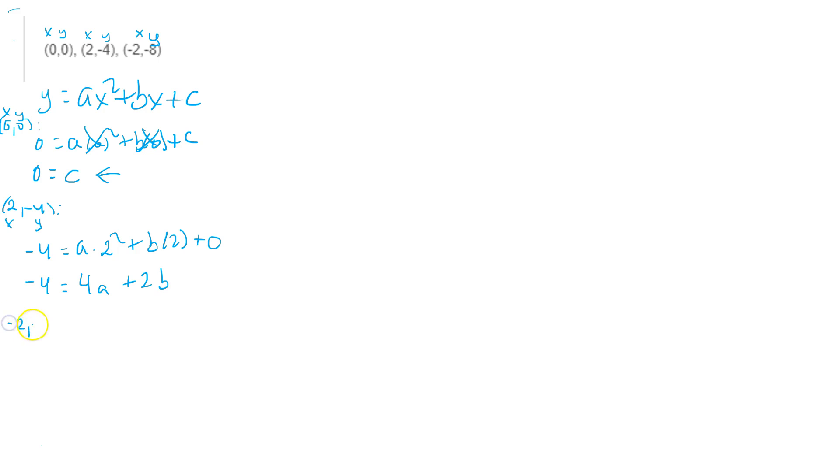Take a look, you need to use this point, (-2, -8). So when I work that out here, again, I'm going to put -8. That's my value of y. Remember, this is y, this is x. And on the right side I'm going to put a times (-2) squared plus b times (-2).